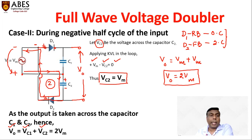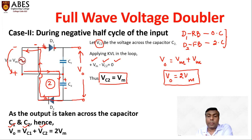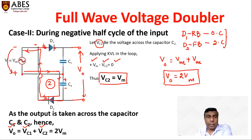The question arises: why is it called a full wave voltage doubler? Because V0 = VC1 + VC2, and VC1 = Vm was calculated during the positive half cycle while VC2 = Vm was calculated during the negative half cycle, the total output uses the complete cycle of input voltage — both positive and negative half cycles. Therefore, the name is full wave voltage doubler.